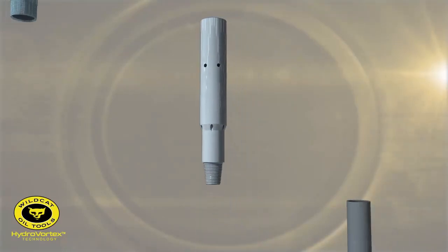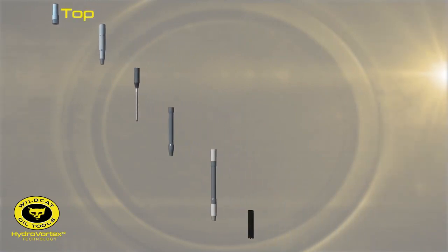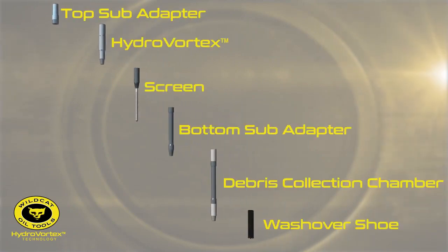The HydroVortex is installed in a bottom-hole assembly, or BHA, with a screen and a multiple joint-debris collection chamber below it.